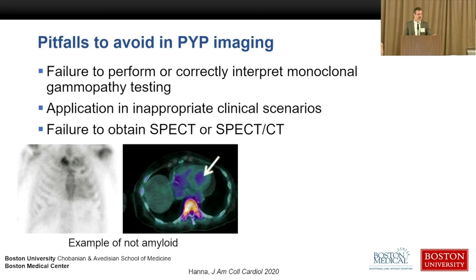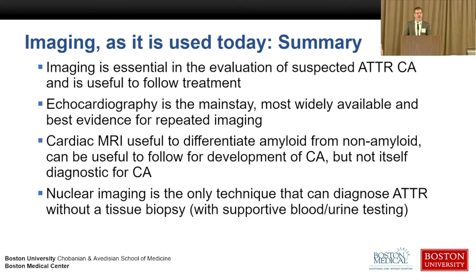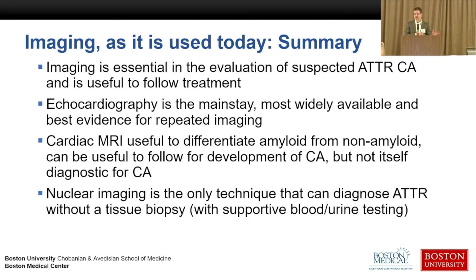One pitfall is that doctors don't obtain blood testing to rule out AL amyloidosis, apply the test in the wrong scenario, or don't get SPECT CT and misinterpret the planar image. In summary, imaging is indispensable for cardiac amyloidosis and ATTR identification and useful for following response to therapy. Echo is the mainstay — we follow strain primarily, along with EF, wall thickness, and heart pressures. Cardiac MRI is useful as a one-time test to confirm amyloid or not. The only test that can really diagnose amyloid without tissue biopsy, aside from blood testing, is the PYP scan.